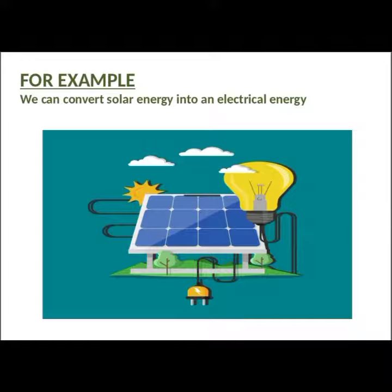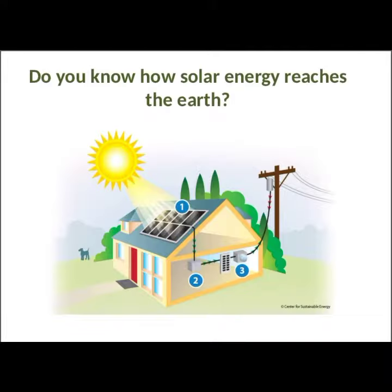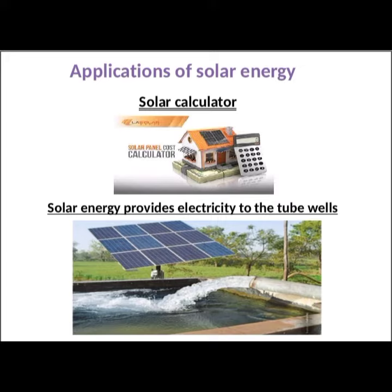Light travels in the form of waves, and solar energy reaches the earth in the form of sunlight. The total solar energy received is reduced due to the following reasons: the atmosphere is a collection of different gases, and solar energy is absorbed by gas particles, water vapor, and dust particles.